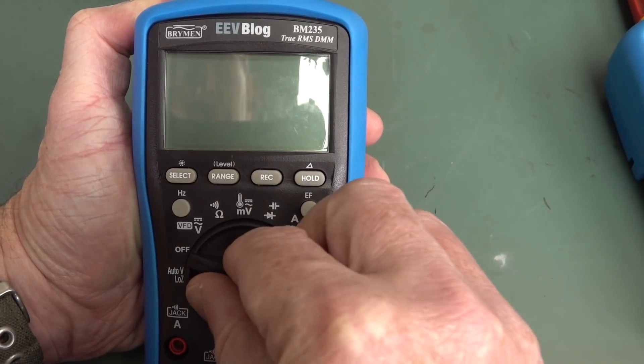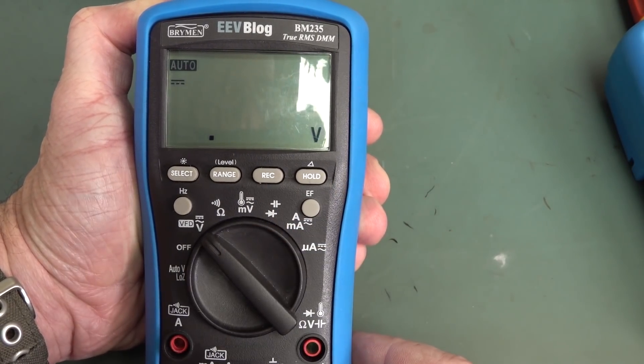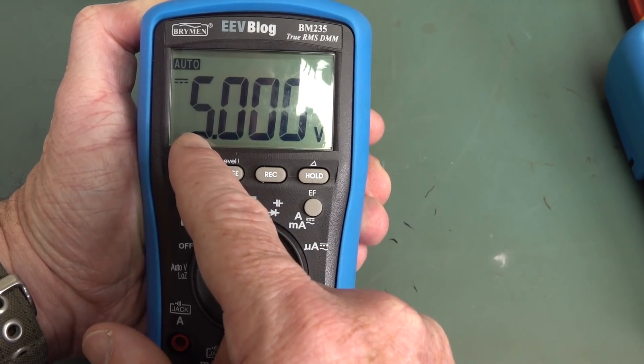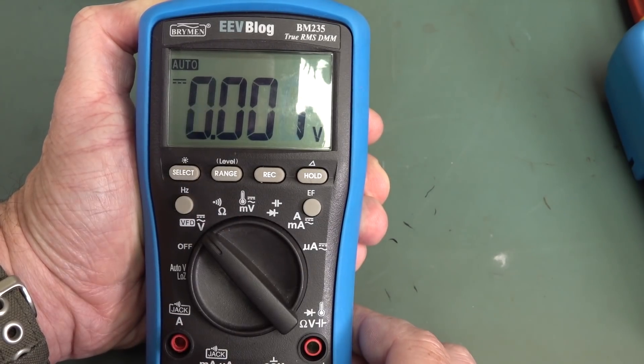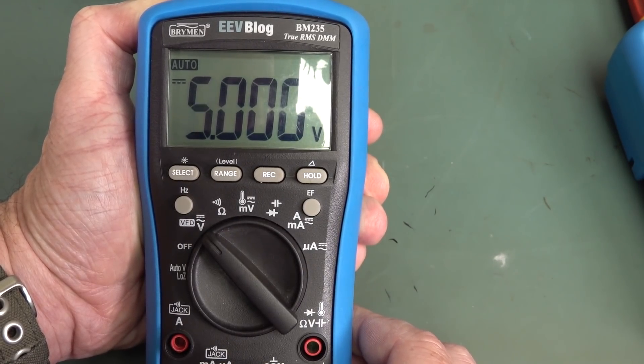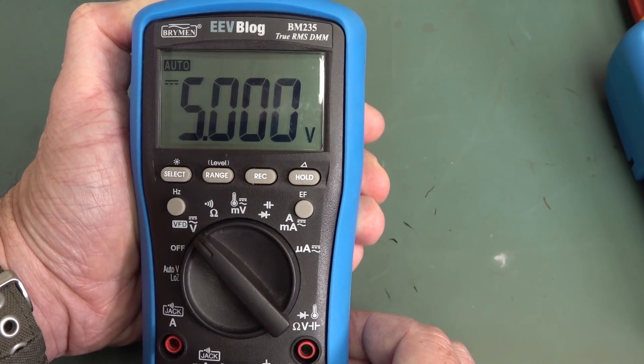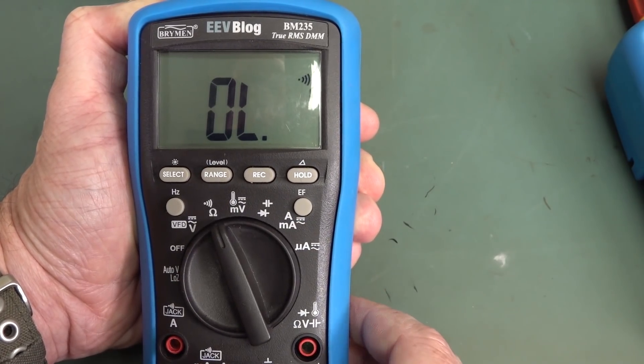So anyway, let's switch this puppy on and have a look. I assume it still has batteries. And there we go. That's the fault. He actually sent me a video of this, and I thought, wow, I've never seen that before. Look at this. It's jumping from zero to full scale. What the?